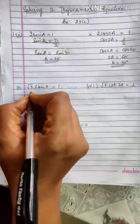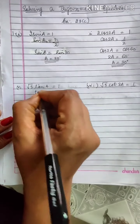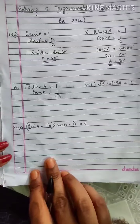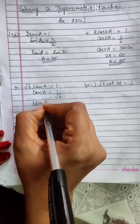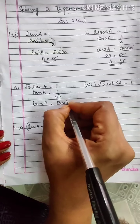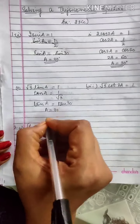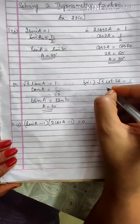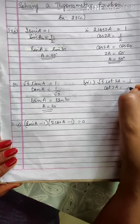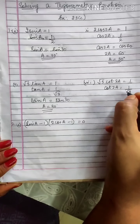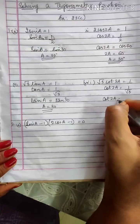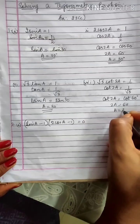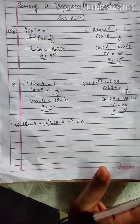Now the next sum: root 3 tan A is equal to 1. We will follow the same method — transpose root 3 to the right hand side and you get tan A equal to 1 by root 3. You know the value of tan for which it is 1 by root 3 is tan 30, so A is equal to 30 degrees. Please remember, don't cancel the tan — that is a wrong usage. Next: root 3 cos 2A is equal to 1, so cos 2A equals 1 upon root 3. The angle for which cos is 1 by root 3 is cos 60, so 2A is equal to 60 degrees and A will be equal to 30 degrees.